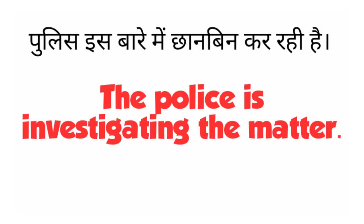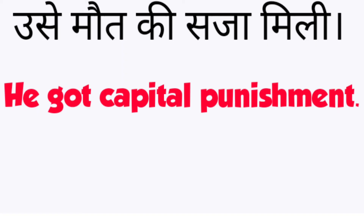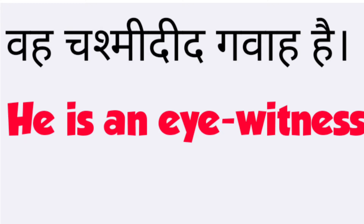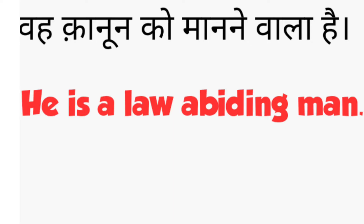The next sentence is: the police are investigating the matter. If you want to say he got the death penalty, you say: he got capital punishment. The next sentence is: he is an eyewitness. And the next sentence is: he is a law-abiding man.